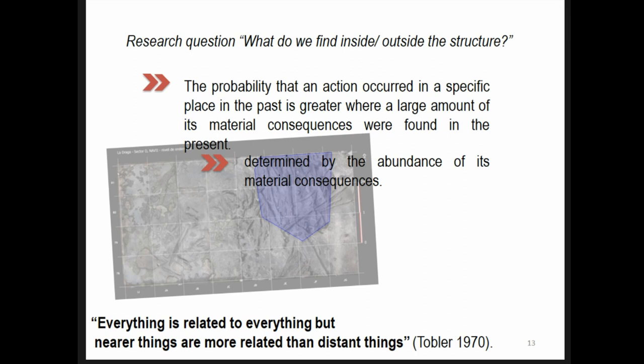The relevance of the nearby area and the more distant locations relies on the assumption that the probability that an action occurred in a specific place in the past is greater where a large amount of material consequences were found in the present. This assumption follows Tobler's Law, which expresses that everything is related to everything, but nearer things are more related than distant things.